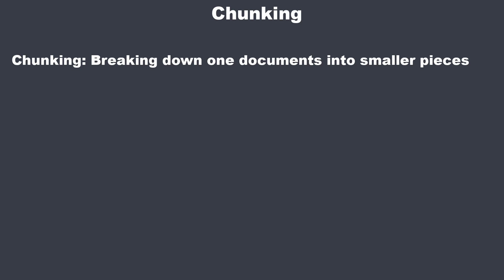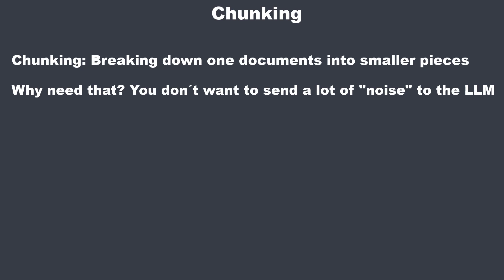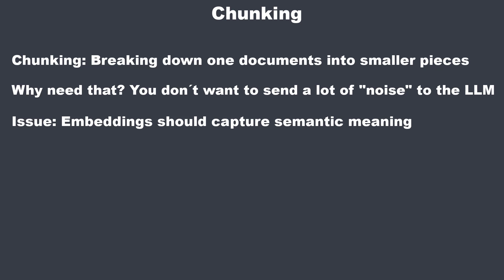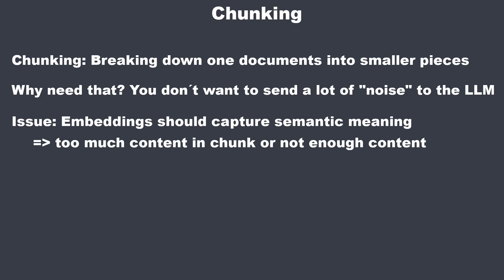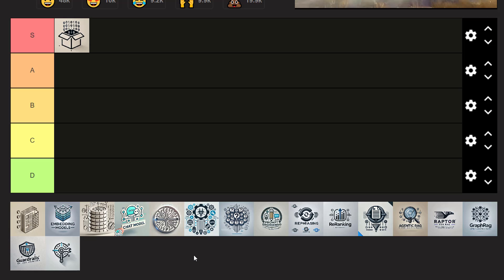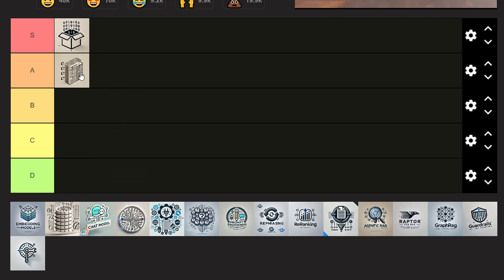Now let's look at chunking methods, still in the ingestion phase. Chunking involves breaking down large documents into smaller, manageable pieces, which is crucial for ensuring the model can process and retrieve relevant information efficiently. Modern frameworks offer text splitters out of the box, but they struggle to create chunks that capture the semantic meaning of text — either too much or too little content. It gets harder when raw data contains images or tables. Using an LLM to create meaningful chunks gave me a great performance boost. It's an often overlooked topic — I'd put chunking in A tier.